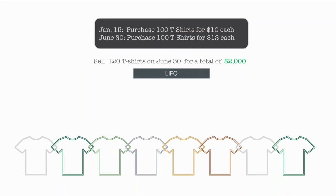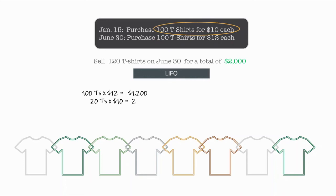Let's look at the LIFO method. The LIFO method says the last t-shirts I bought are the ones I sell first — selling from the top of the pile. So I start with the last ones I purchased at $12 each: 100 t-shirts at $12 is $1,200. Then I still need 20 more from the first batch: 20 times $10 is $200. My total price for those 120 shirts is $1,400. The per-shirt cost is $11.67. The shirt cost is higher under LIFO because the items purchased at a later date were more expensive. This would vary depending on whether the cost of goods is increasing or decreasing over time.